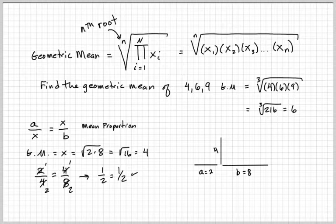So why would we want to find this mean proportion? We can use it in similar triangles and problems like that in geometry. We can also use it for golden ratios. Believe it or not, we can also use it for ham radio.